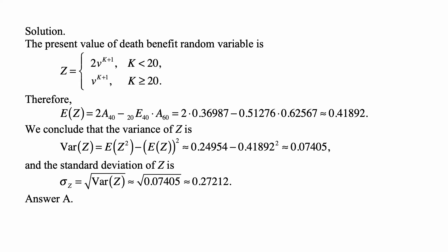Here's the solution. The present value of the death benefit random variable is Z equal to 2V^(K+1) for K less than 20, and V^(K+1) for K greater than or equal to 20.